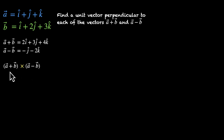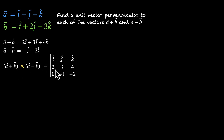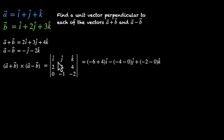(a plus b) cross (a minus b) is equal to the determinant of i, j, k with components of a plus b — 2, 3, 4 in the second row — and components of a minus b — 0, minus 1, minus 2 in the third row. Expanding this: i-cap times (minus 6 plus 4), minus j-cap times (minus 4 minus 0), plus k-cap times (minus 2 minus 0).